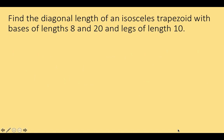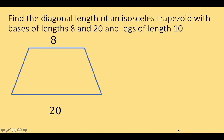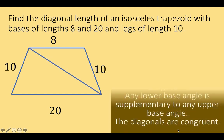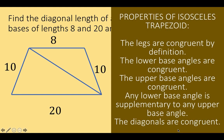Let's first draw our trapezoid. We are given an isosceles trapezoid with base lengths of 8 and 20 units respectively. Since we are given an isosceles trapezoid, the lengths of the legs are equal, and we are given legs of length 10 units. Now let's recall the properties of an isosceles trapezoid. First, the legs of an isosceles trapezoid are congruent by definition — the lengths of the legs are 10 units and 10 units respectively.